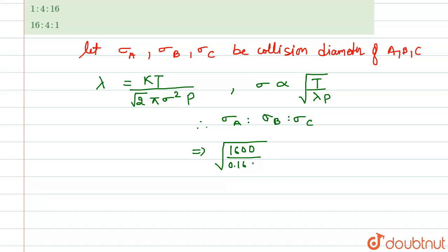The ratio again under root of temperature which for B is 200 divided by 0.16 into 2. Similarly writing for gas C, this will be 400, the temperature divided by lambda which is 0.04 into pressure 4. If we calculate from this, this comes out to be 4:1:2.